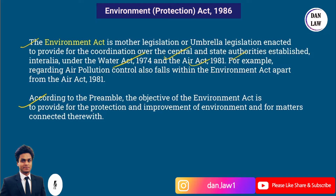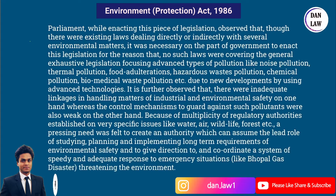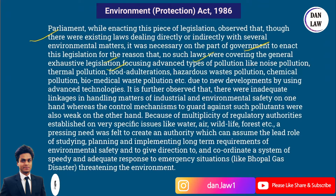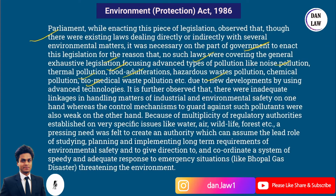According to the preamble, the objective of the Environment Act is to provide for the protection and improvement of environment and for matters connected therewith. Parliament, while enacting this legislation, observed that though there were existing laws dealing directly or indirectly with several environmental matters, no such laws covered a general exhaustive legislation focusing on advanced types of pollution like noise pollution, thermal pollution, food adulteration, hazardous waste, chemical pollution.